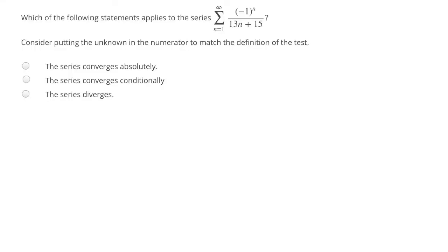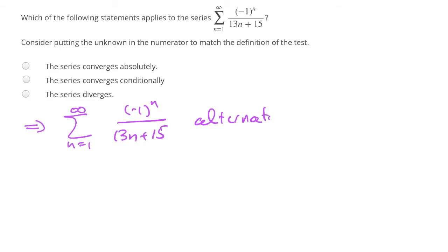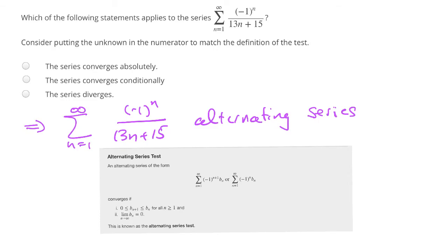We know we don't have absolute convergence, but do we have conditional convergence? Looking at the series itself — from n=1 to infinity — the (-1)^n tells us we've got an alternating series. We would then check using the alternating series test whether this converges. The alternating series test requires two conditions: first, that the positive terms of our series are decreasing; and second, that the limit as n → ∞ of those terms goes to 0.